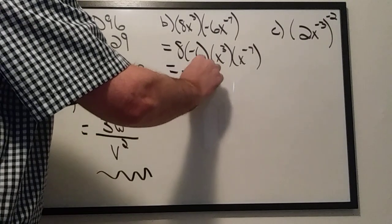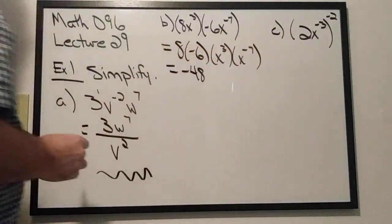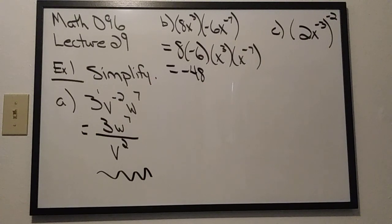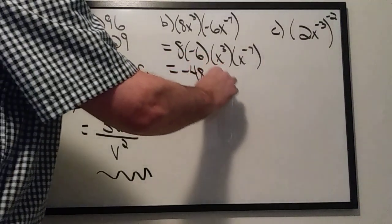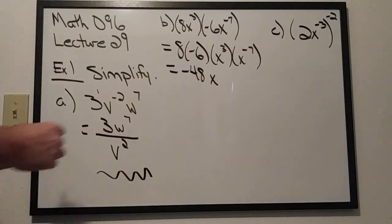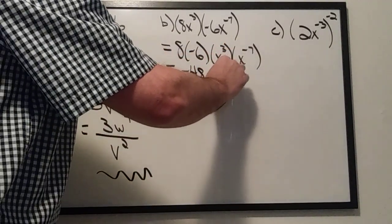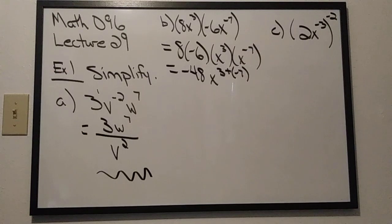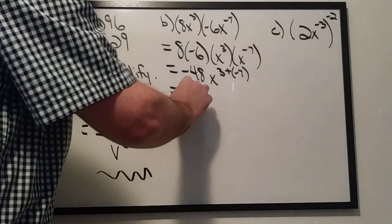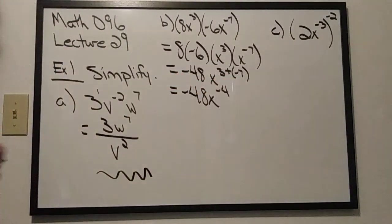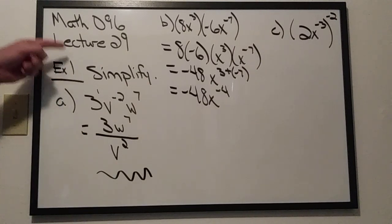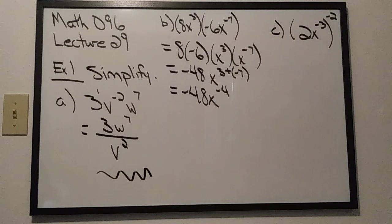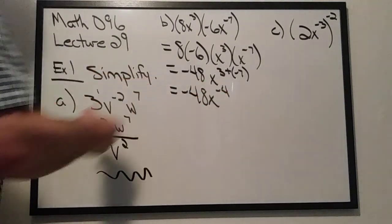Now I can multiply the pieces that look like each other. 8 times negative 6 is negative 48. Then x to the third times x to the negative seventh — I have x to a power times x to a power, which is the product rule. The product rule tells me to add those two exponents: 3 plus negative 7 gives negative 4. So this is going to be negative 48x to the negative fourth power. It's tempting to say that's the final answer, but remember our directions — simplify means no negative exponents.